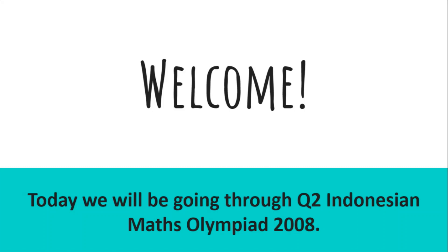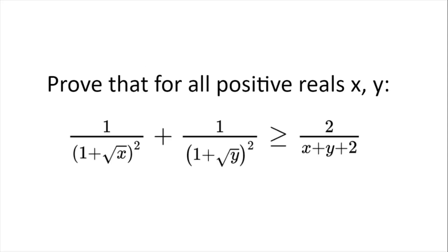Welcome! Today we'll be going through question 2 from the Indonesian Maths Olympiad 2008. Prove that for all positive reals x and y, 1 divided by (1 plus the square root of x) squared plus 1 divided by (1 plus the square root of y) squared is greater than or equal to 2 divided by (x plus y plus 2).